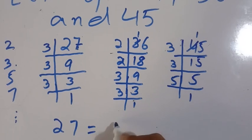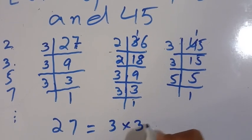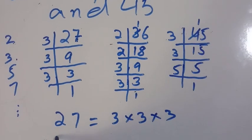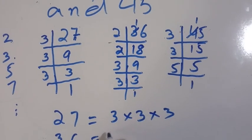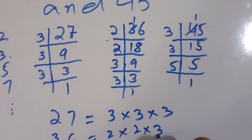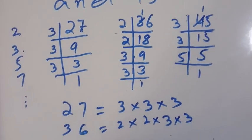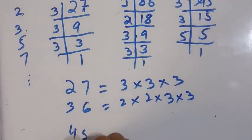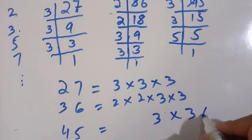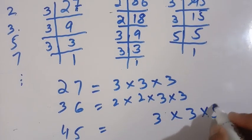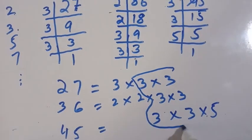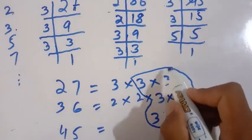Now we write the prime factorizations: 27 = 3 × 3 × 3, 36 = 2 × 2 × 3 × 3, and 45 = 3 × 3 × 5. These are the prime factors of these three numbers.